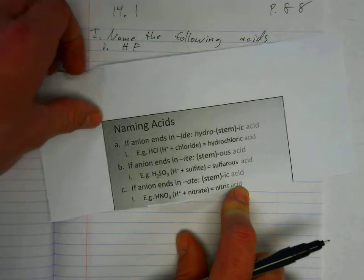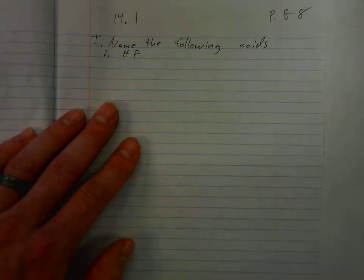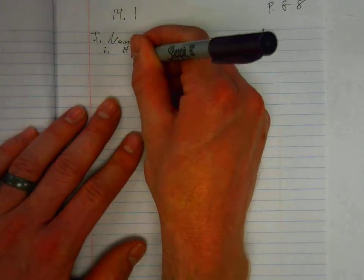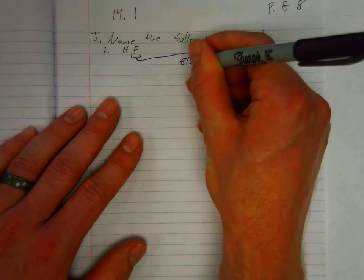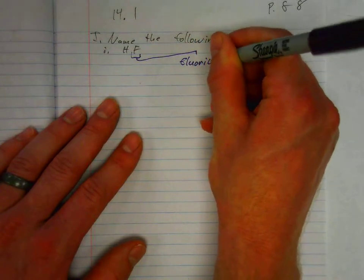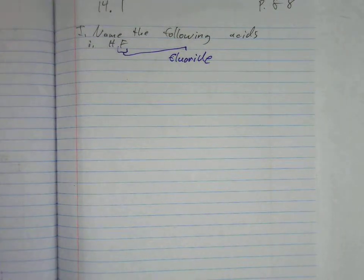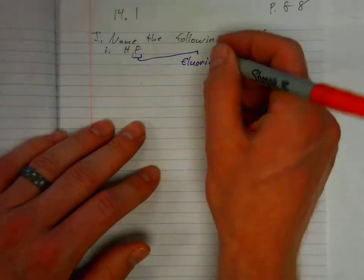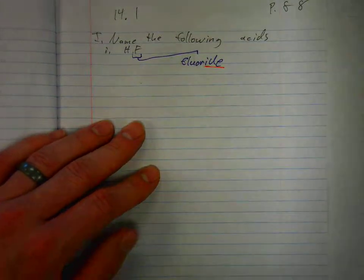HF. We identify the anion, and that anion is fluoride. Since fluoride ends in IDE, the rule is hydro, stem, ic.